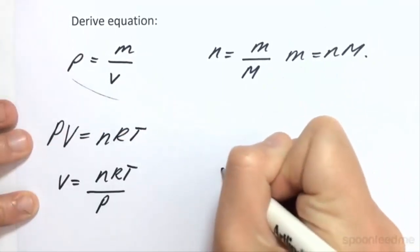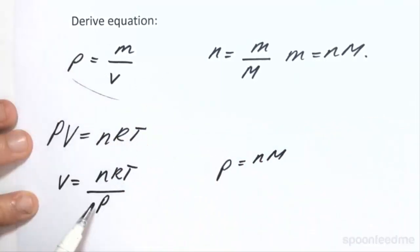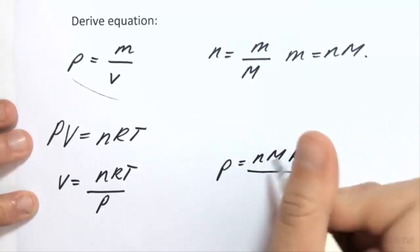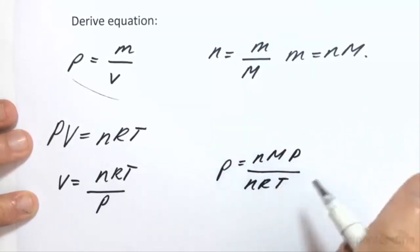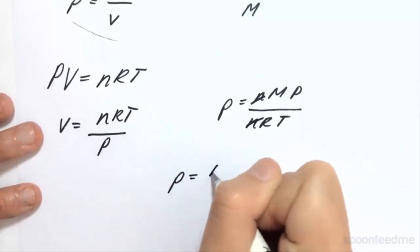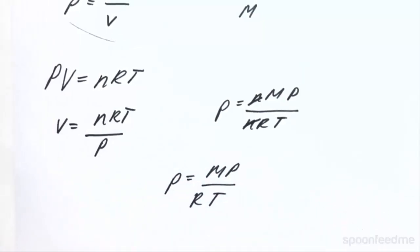So we know that density is equal to the moles times the molar mass times the pressure over an RT. If we cancel N, we find finally that our density is equal to our molar mass times our pressure over the ideal gas constant times the temperature. So we can now relate the density of a gas to its molar mass, the pressure and the temperature.